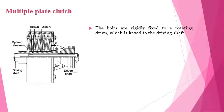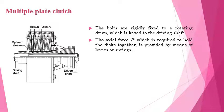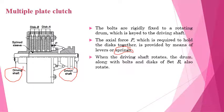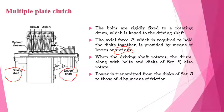These bolts are rigidly fixed to the rotating drum, which is keyed to the driving shaft. The axial force P or F required to hold these discs together is provided with the help of springs. When the driving shaft rotates, the drum along with the bolts and the discs of Set B rotate as one unit, and power is transmitted from the discs of Set B to the discs of Set A with the help of friction.